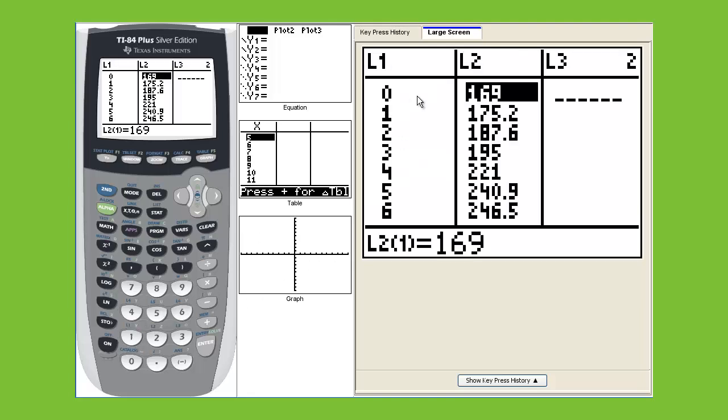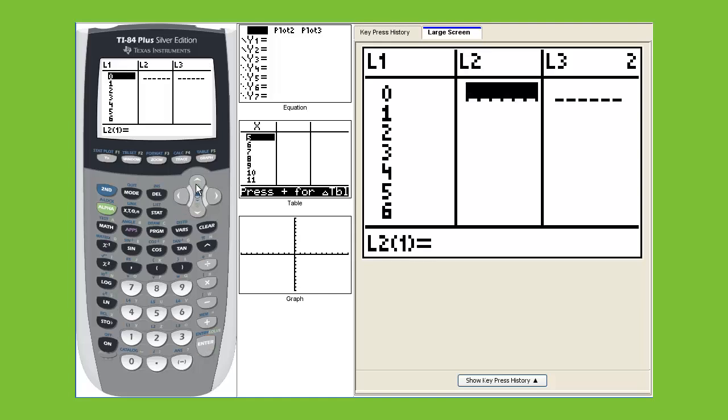What we need to do is put in some numbers here. If you need to clear your list, the best thing you can do is go up to your L2, hit clear, and then hit enter. That gets rid of it. Then you can go over to your L1, hit clear, enter, and that's gone also.